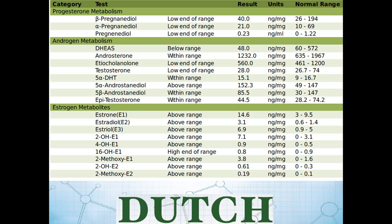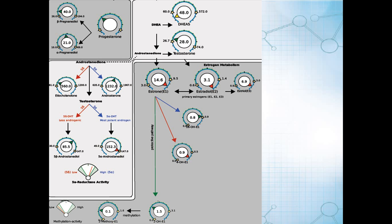Starting with the report, we're looking at progesterone metabolites, androgen metabolites, and estrogen metabolites — it's quite expansive in terms of sex hormone metabolites, and we plot those graphically as well. This case study is a male patient with relatively low testosterone; young healthy men are typically in the 50s, 60s, and even 70s, so his testosterone has dropped down quite a bit. His DHEAS is low, but when we look at DHEA we're looking at the sulfate as well as two downstream metabolites.